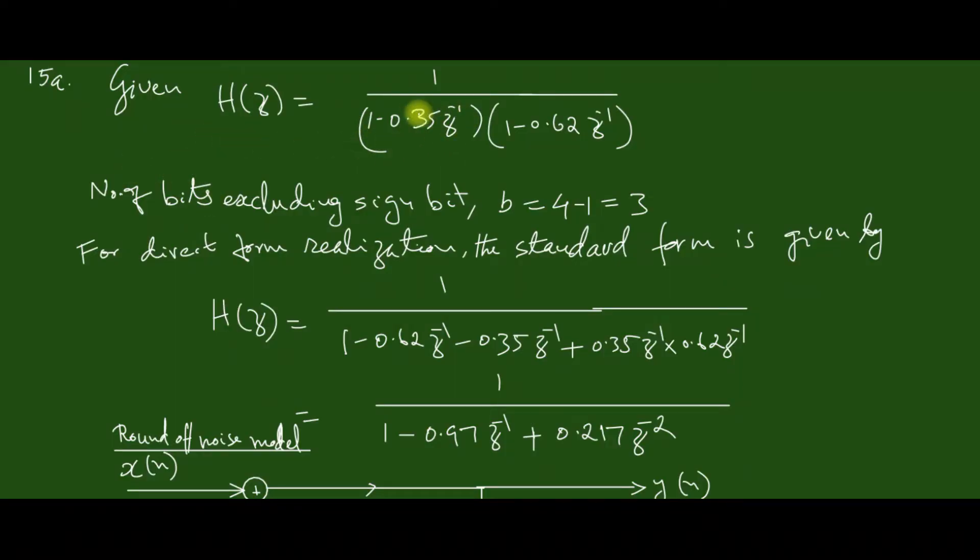So given H of z, then in this case, the number of bits including sign bit is 4. So excluding sign bit, which is equal to small letter b equal to 3.